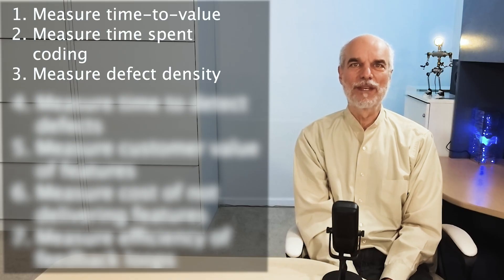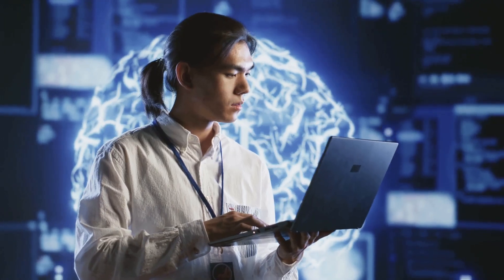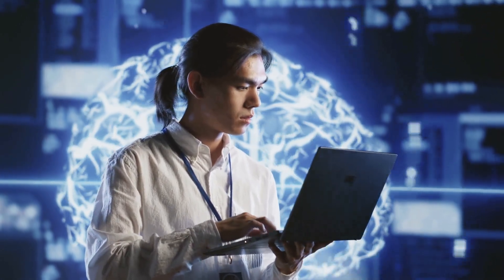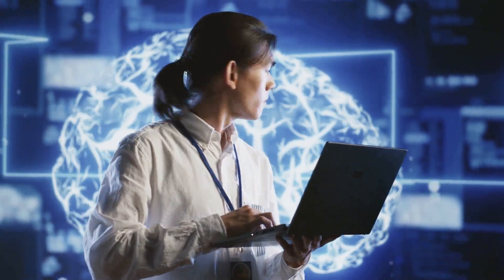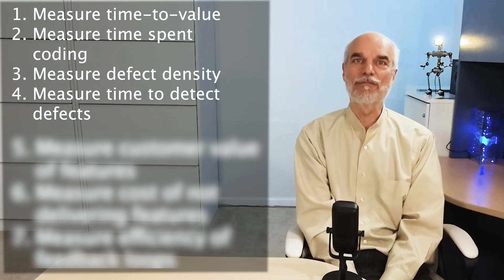Number four: measure time to detect defects. It's been shown that the cost of fixing a defect increases exponentially as the time elapsed since the defect was created. The cheapest defects to fix are the ones that are detected and fixed immediately. Finding defects faster not only decreases the cost of fixing them, but also helps developers become aware of things they may be doing that allow the defects to be created in the first place.